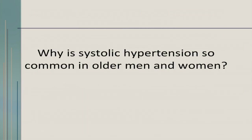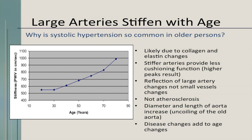Why is systolic hypertension so common in older people? Isolated systolic hypertension is common in older people because as we age, our arteries stiffen. Look at the big jump between age 30 and 90 in arterial stiffness. This is probably due to collagen and elastin — less cushioning function in the large arteries. This is not necessarily atherosclerosis or vascular blocking. The diameter and length of the aorta increases. Adding stiffened arteries on top of all the other changes that occur with aging results in systolic hypertension.